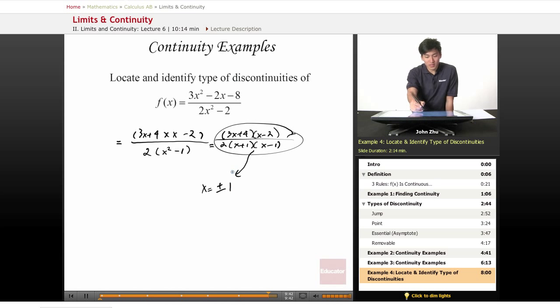So we can say that the types of discontinuities are asymptotic or essential discontinuities at x equals positive and negative 1.